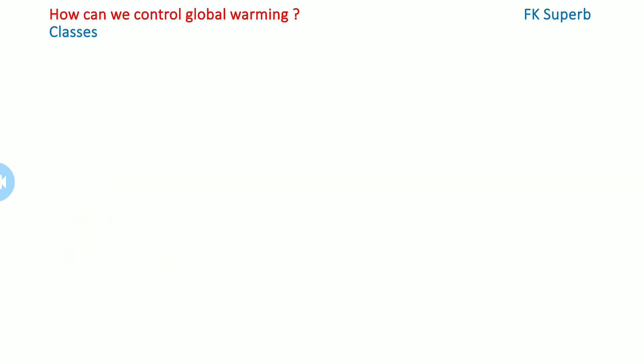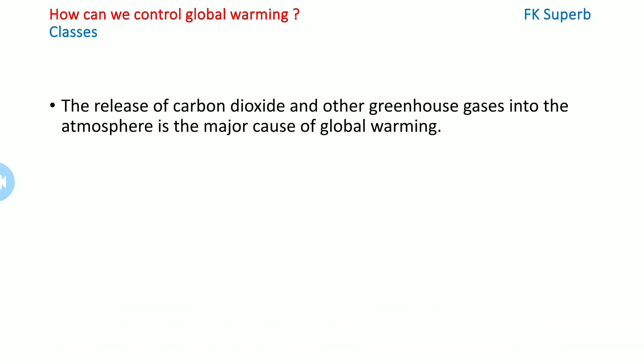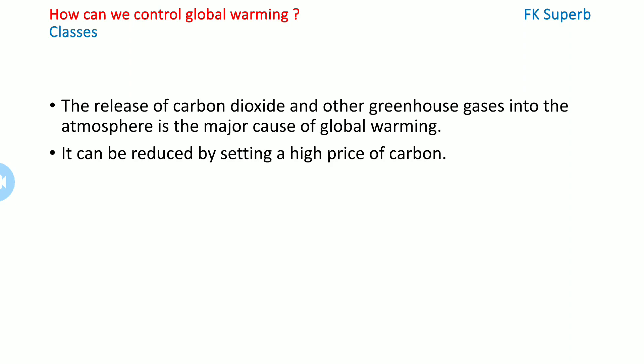These are the effects of global warming we have discussed in detail. Now, how can we control global warming? The release of carbon dioxide and other greenhouse gases into the atmosphere is the major cause of global warming. It can be reduced by setting a high price on carbon.